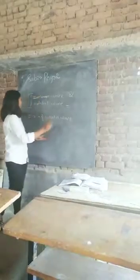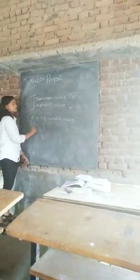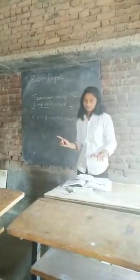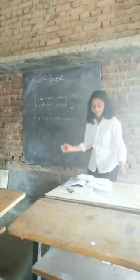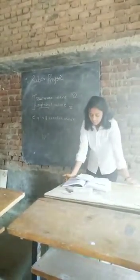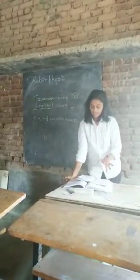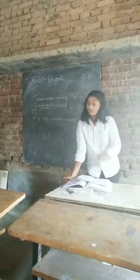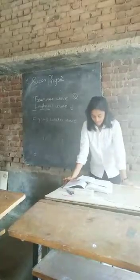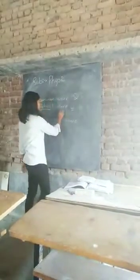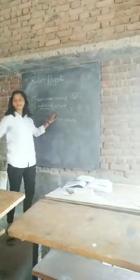Now for longitudinal waves — a longitudinal wave moves in a direction parallel to the wave. The definition is: a longitudinal wave is one in which the medium vibrates in a direction parallel to the direction of wave propagation. Keep that in mind.